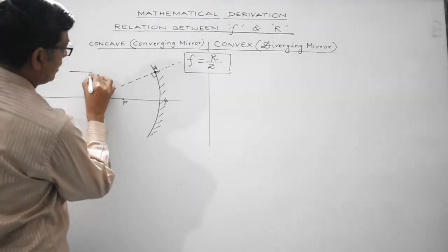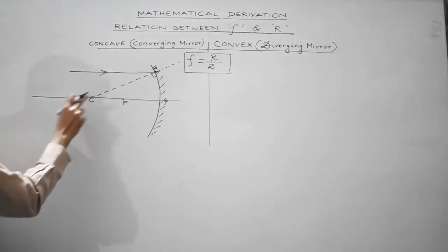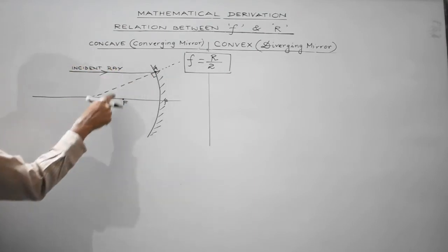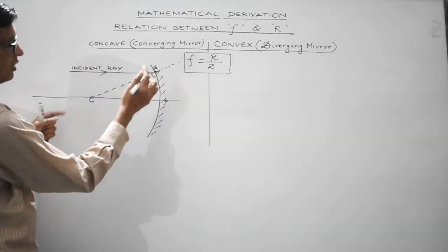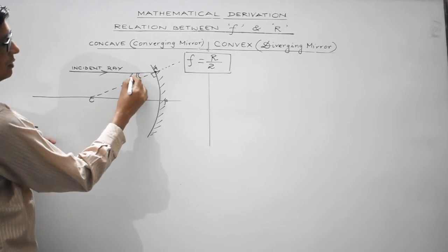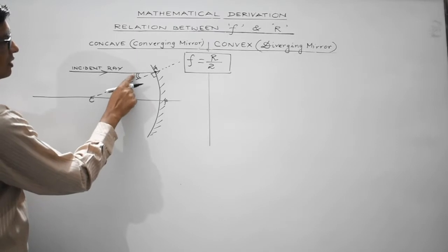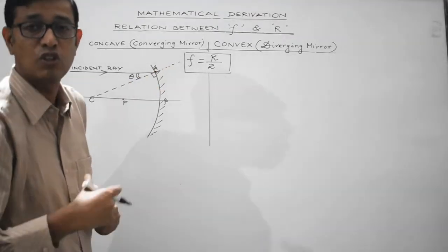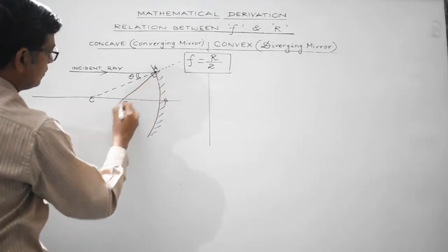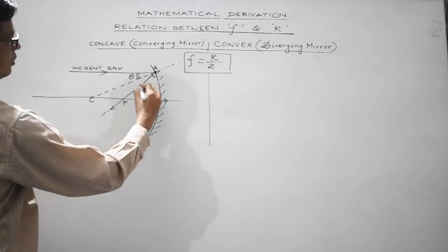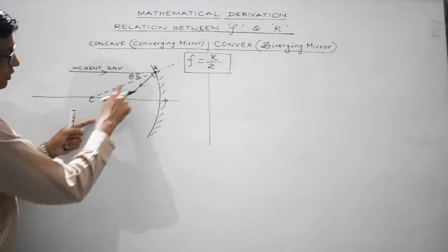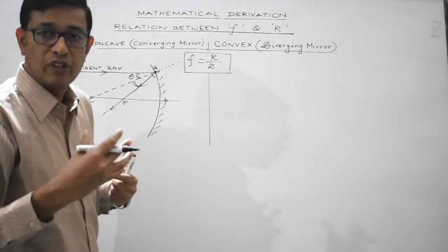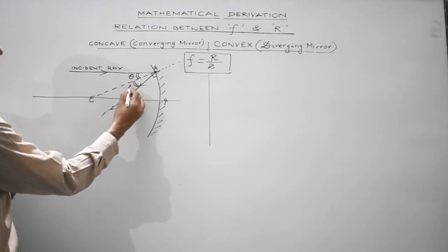A parallel beam of light is incident at point A, with the ray parallel to the principal axis — this is the incident ray. The angle this incident ray makes with the normal is the angle of incidence, which we call theta. The ray after getting reflected obeys the laws of reflection and bounces back into the same medium. The angle the reflected ray makes with the normal is the angle of reflection, and by the first law of reflection, angle of incidence equals angle of reflection, so it is also theta.